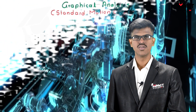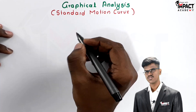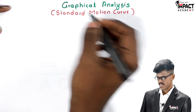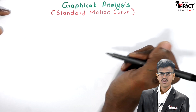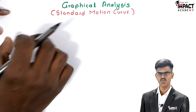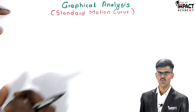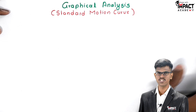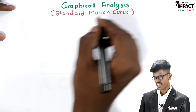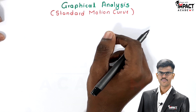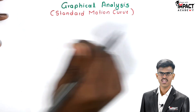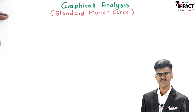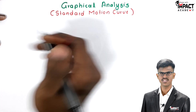Hello friends, today we study graphical analysis of standard motion curves. In our previous video, we covered graphical analysis where we studied different kinds of motion curves like position-time curve, velocity-time curve, acceleration-time curve, and velocity-position curve. In this video, we study standard motion curves. We also study rectilinear motion and different kinds of rectilinear motion — if you don't know what rectilinear motion is, check the link in the description.